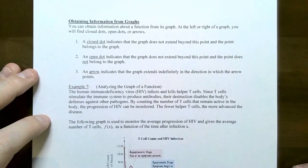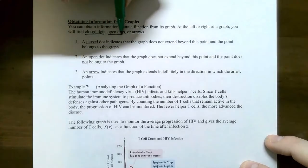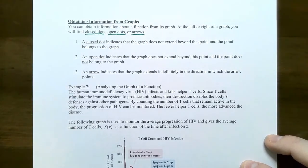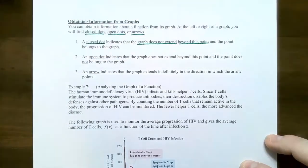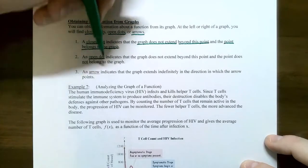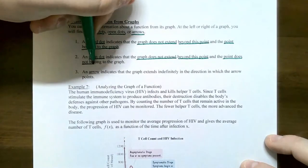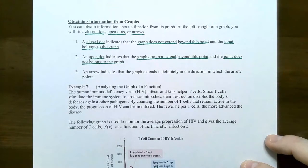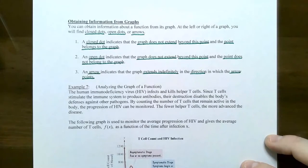Now that we know whether a graph is a function, let's talk about obtaining information from a graph. On the far ends of the graph, it might continue indefinitely or stop. A closed dot means the graph does not extend beyond that point - it stops - and the point belongs to the graph. An open dot means the graph also stops, but the point does not belong to the graph. If you have an arrow, the graph extends indefinitely in the direction the arrow points.